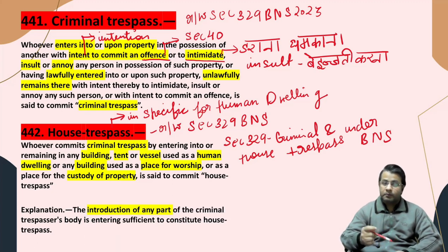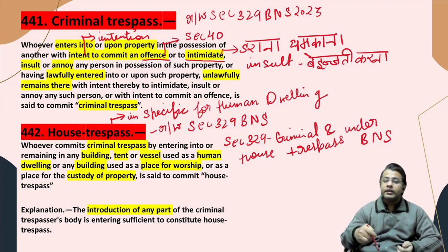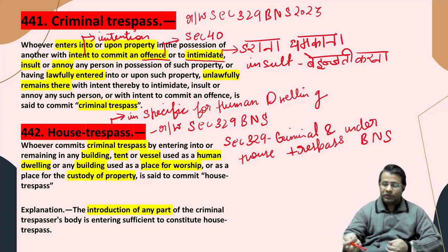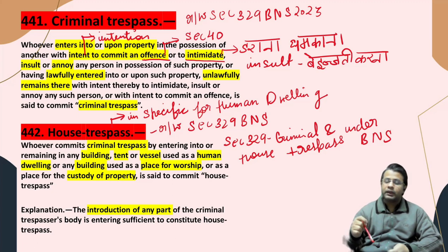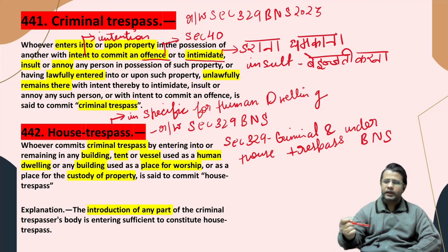Whoever commits criminal trespass by entering into or remaining in any building, tent, or vessel used as a human dwelling — human dwelling से हम लोग क्या समझते हैं, एक ऐसी जगह जो इंसानों के रहने के लिए हो — या फिर कोई ऐसी building जो place of worship के लिए हो, for example church, mosque, या कोई भी place of worship — and as a place for the custody of property, for example कोई go-down जहाँ businessman अपना माल रखता है — is said to commit house trespass।